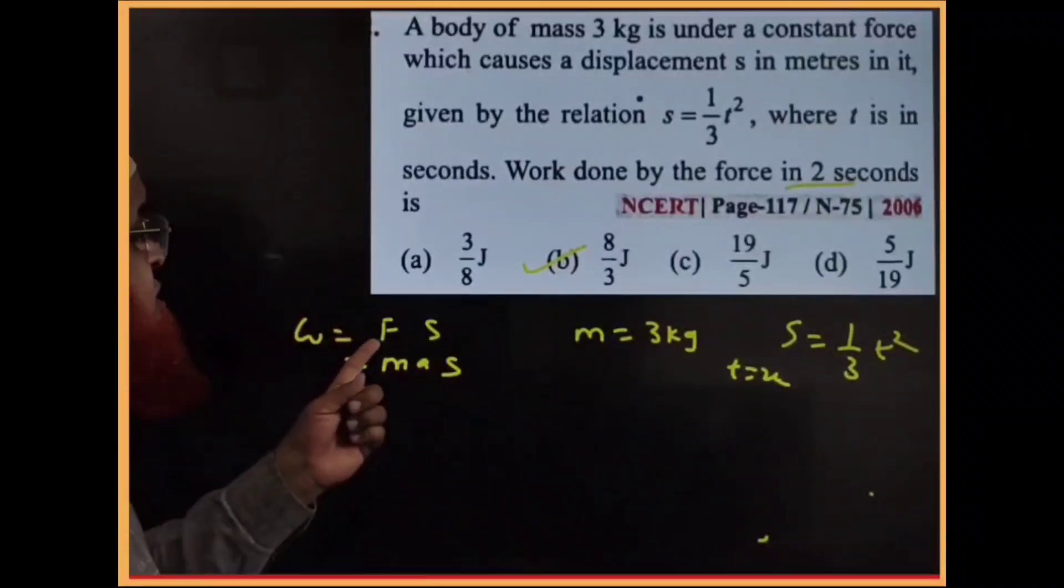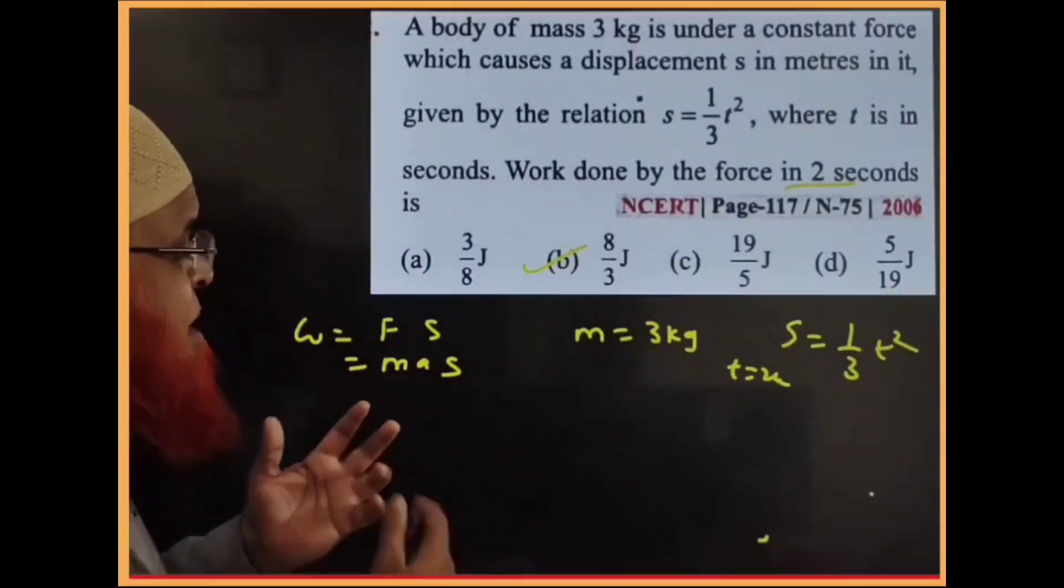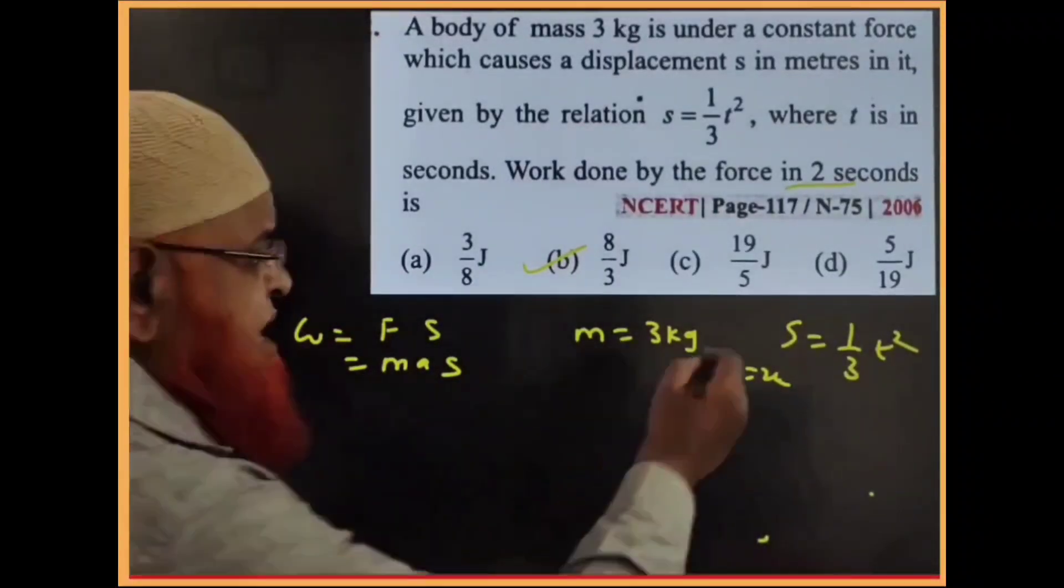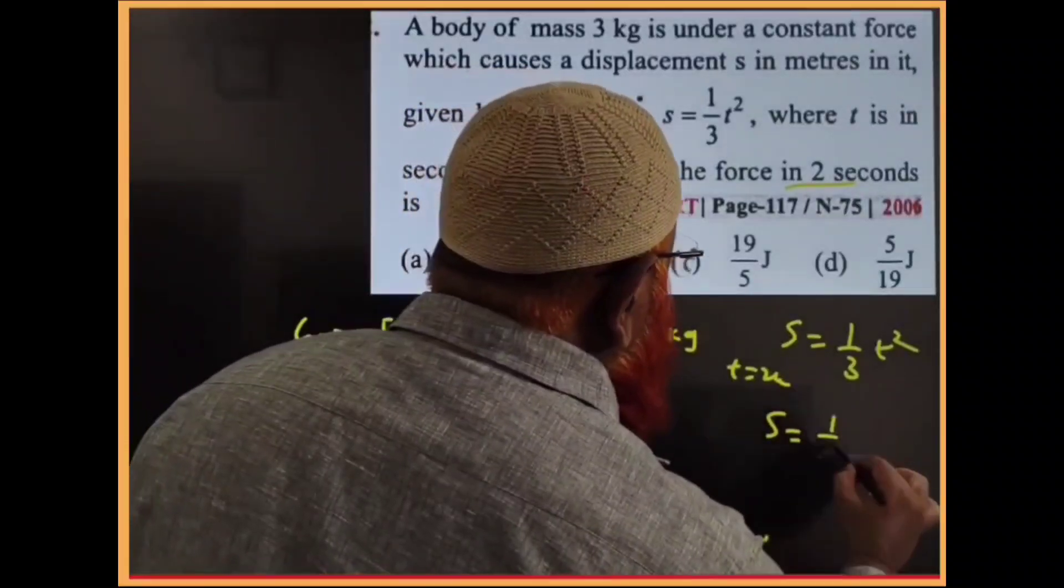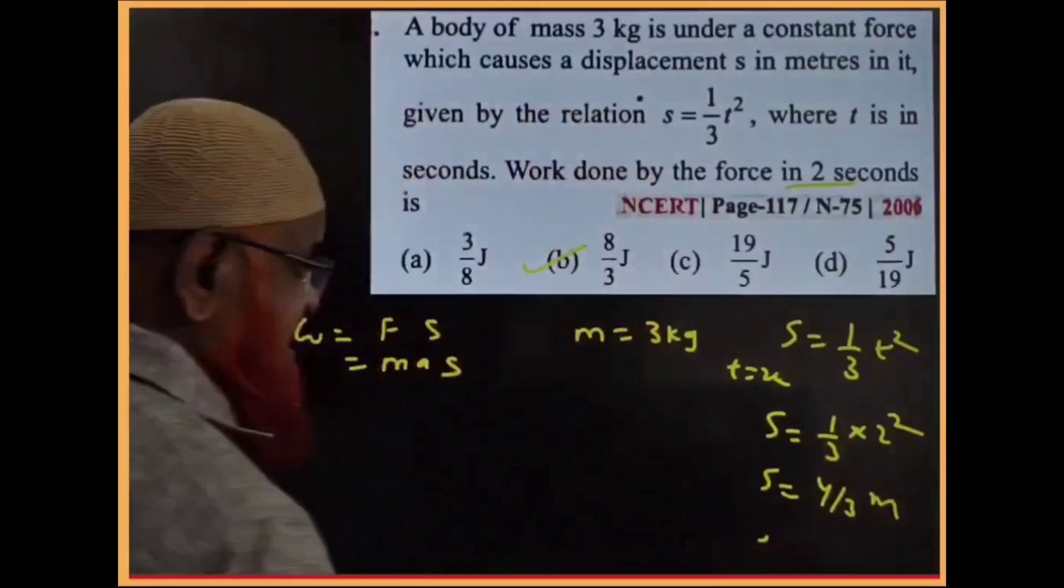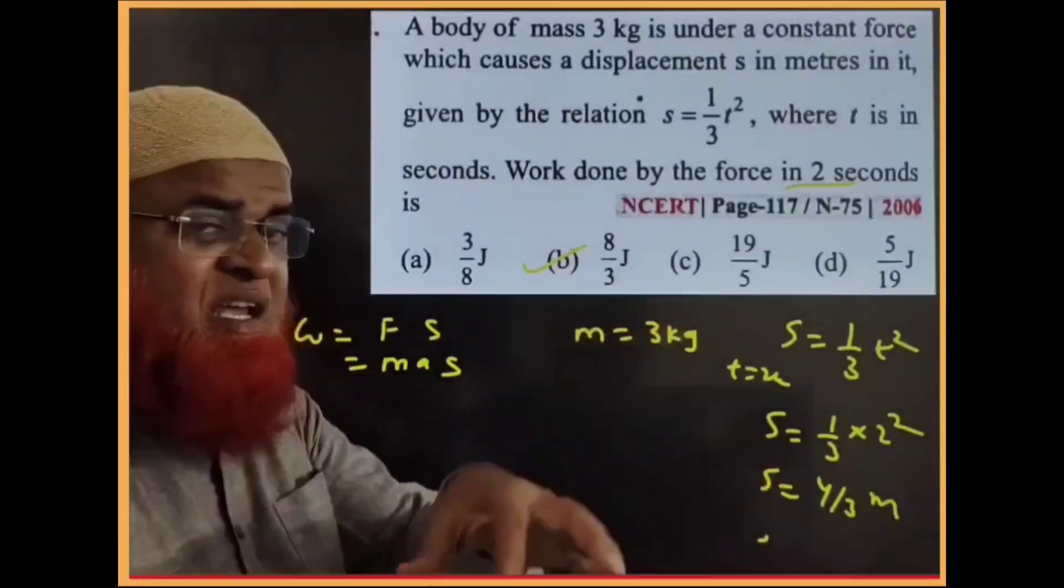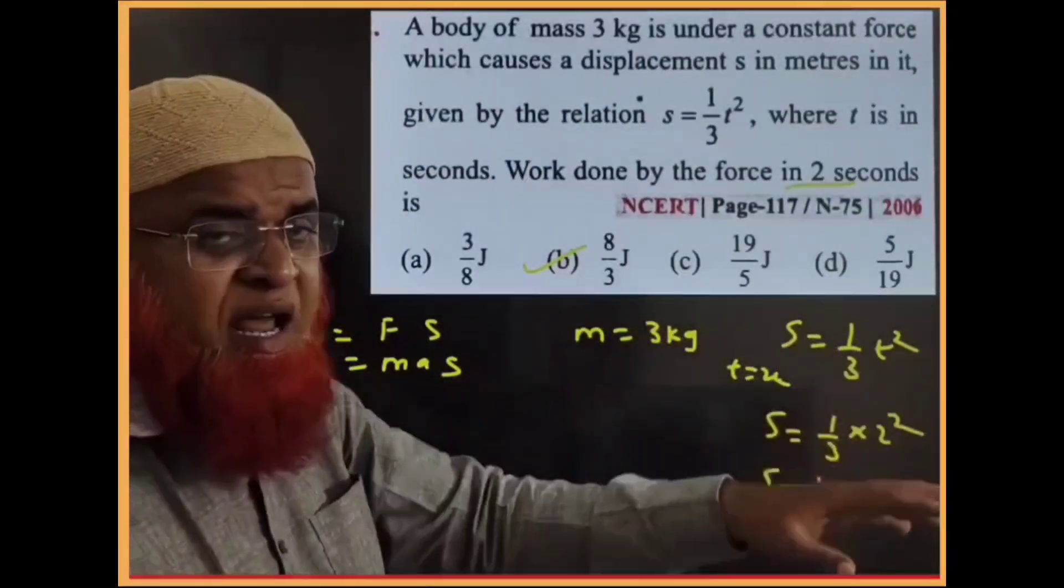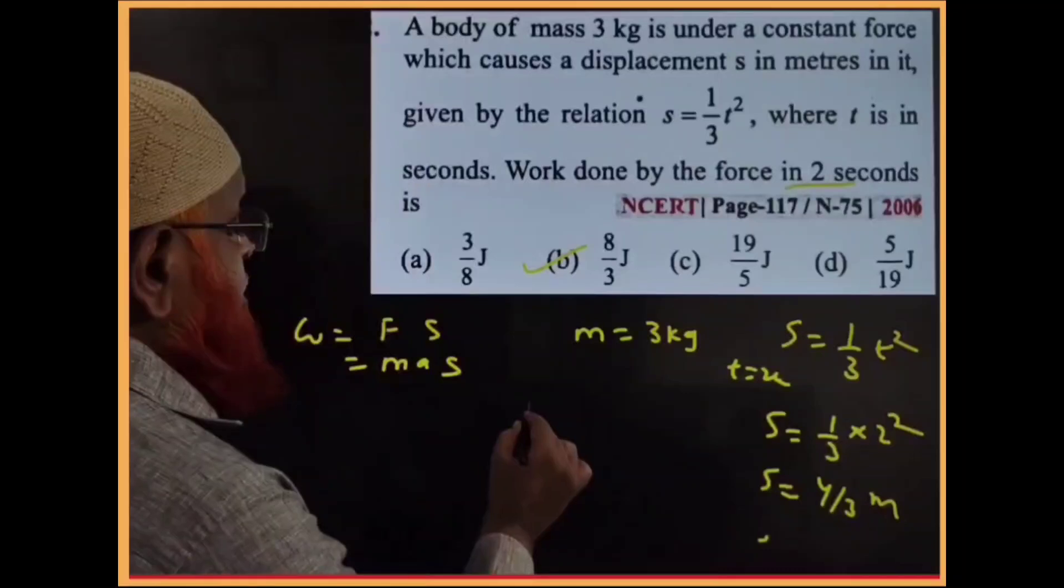You can find out work done equals force into displacement which is nothing but mass into acceleration into displacement. Here you can just substitute the value of t and find out displacement here. So displacement is nothing but 4 by 3 meters. And acceleration you have to find out. For that generally differentiation if you do double time you will get acceleration. But without using differentiation I am going to do here.